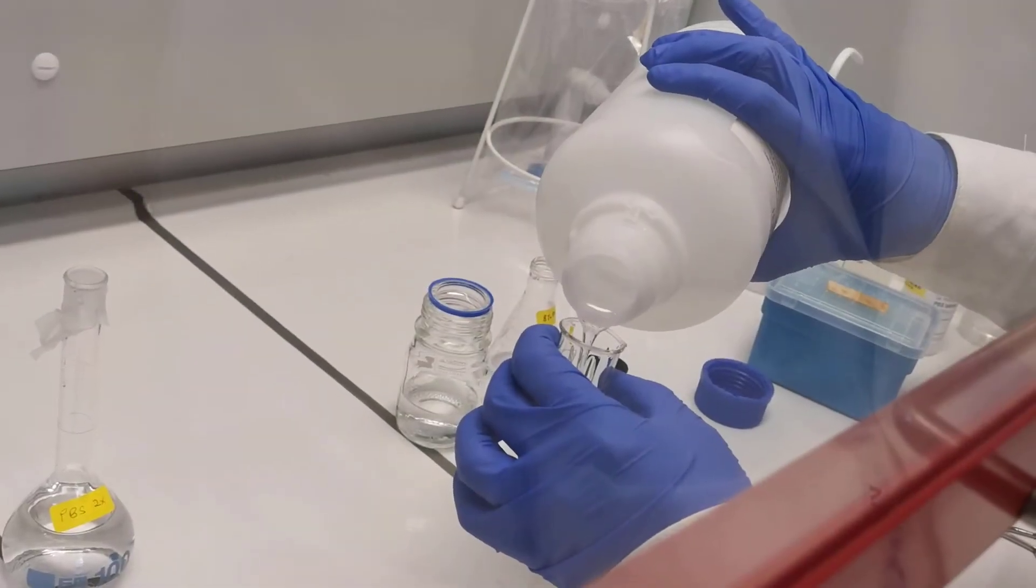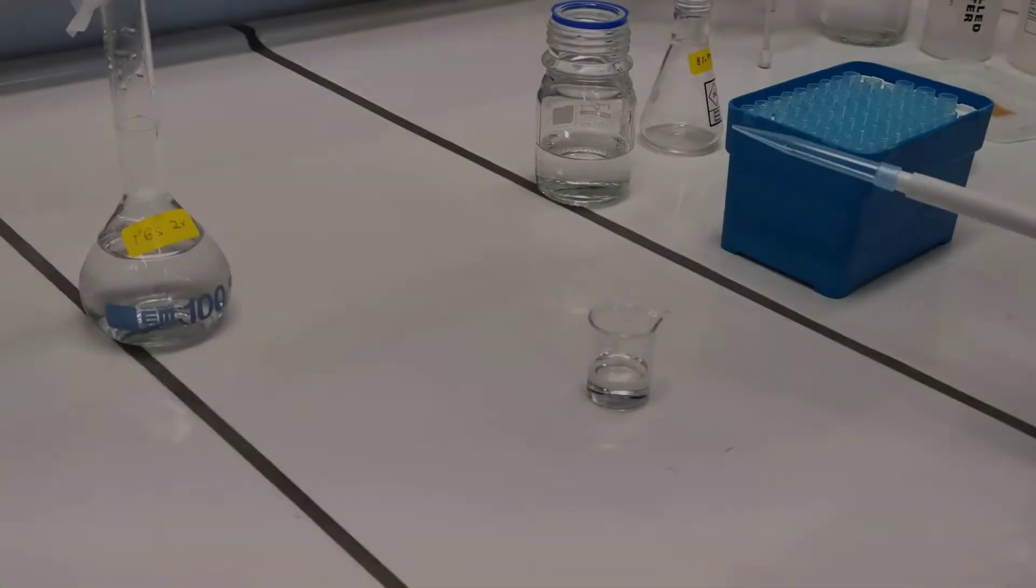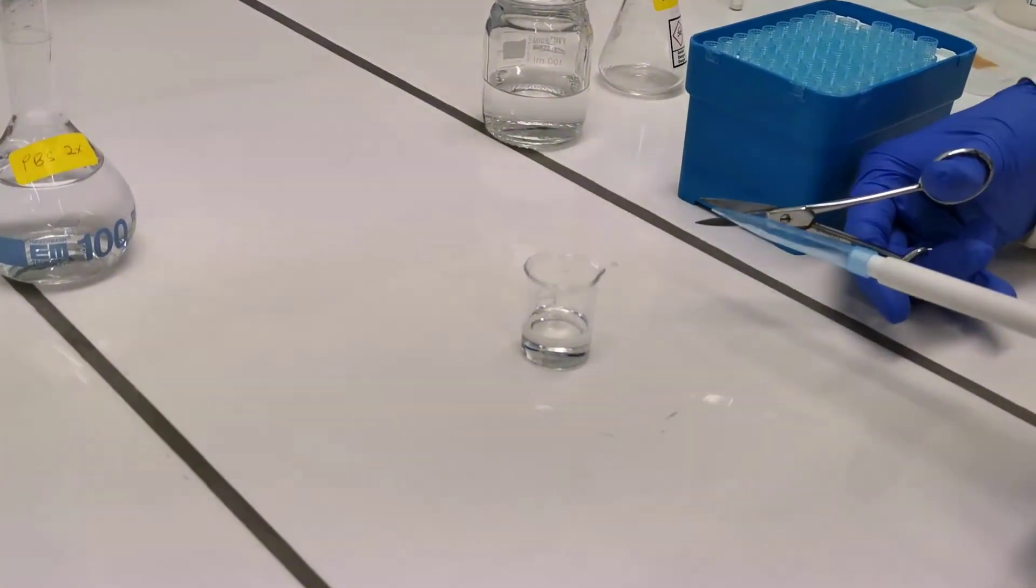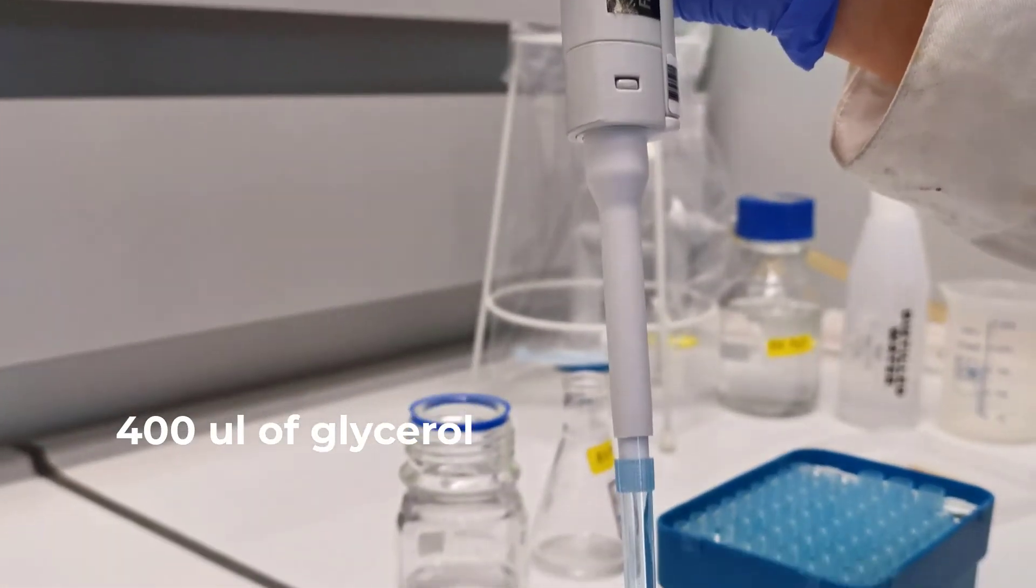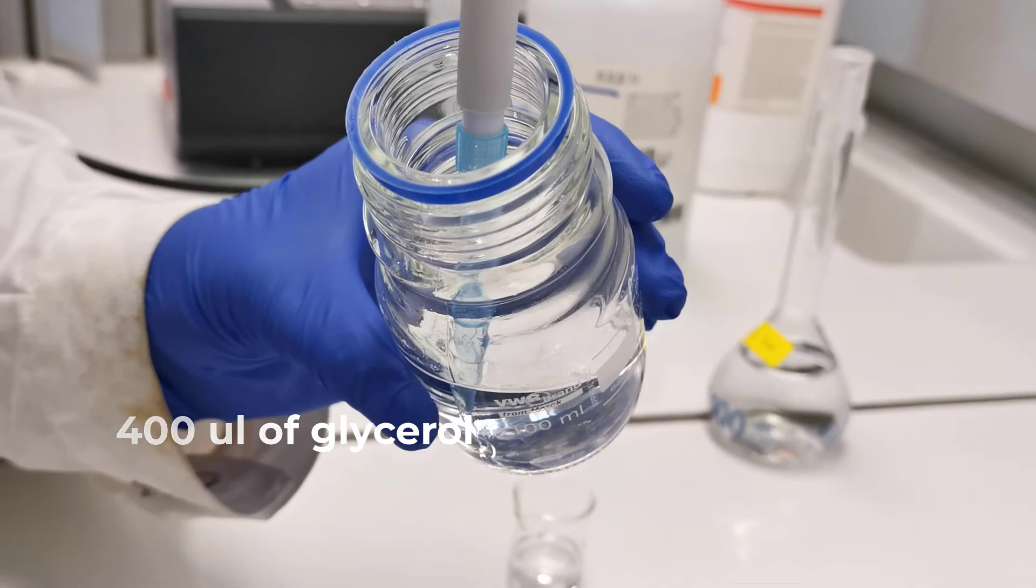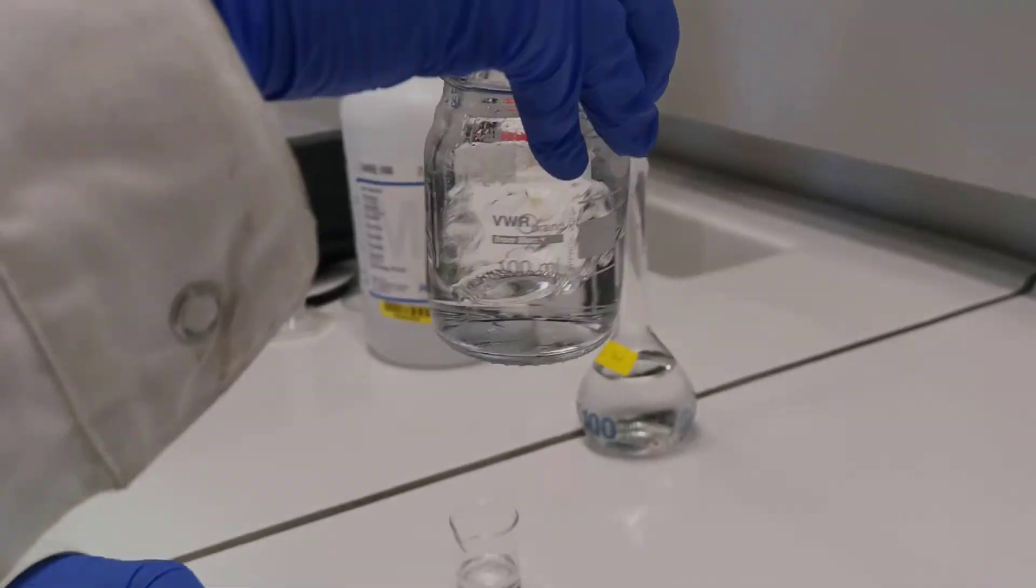We also add glycerol to our fixative at a rate of 1% of the total volume of the fixative. Glycerol is added to enhance the color of the fixed specimen for long-term storage. So in our case, 400 microliter of glycerol is added to our fixative.